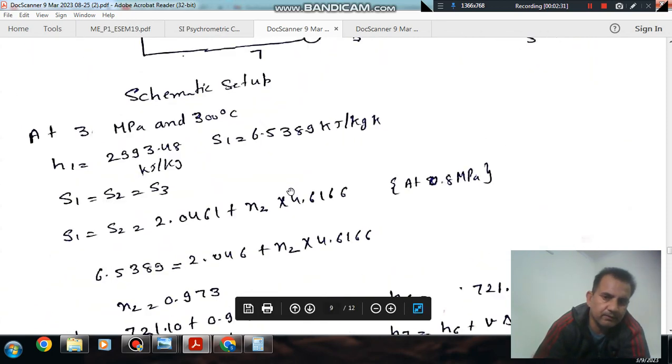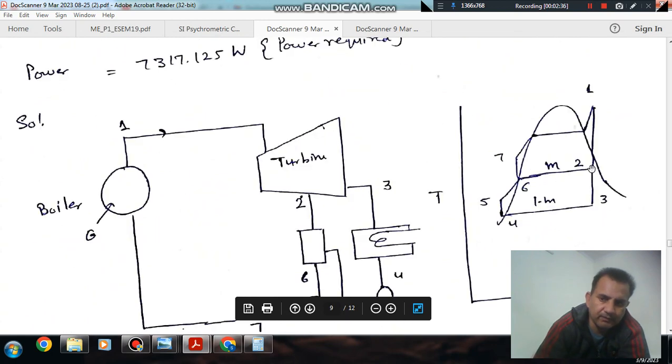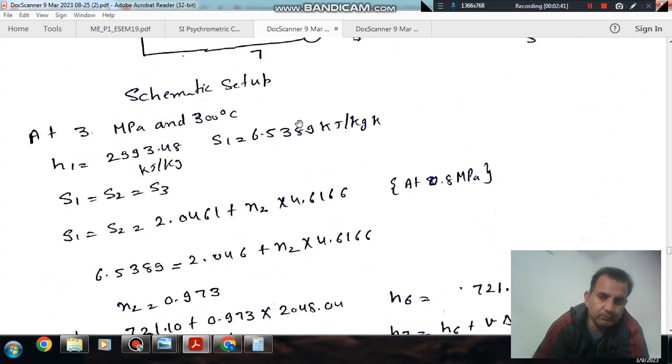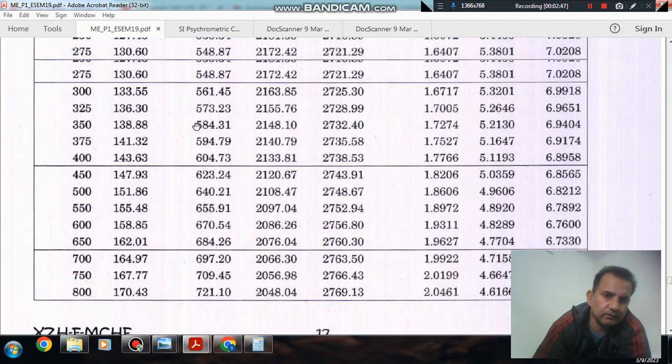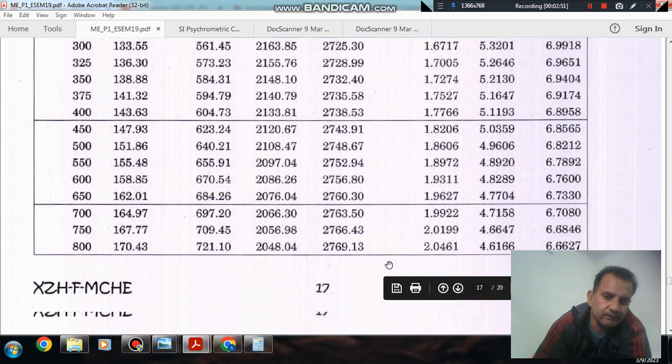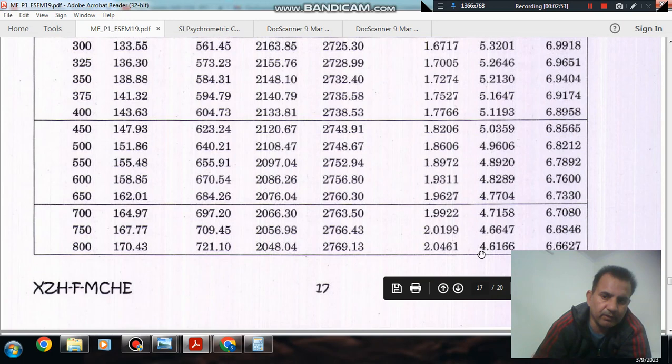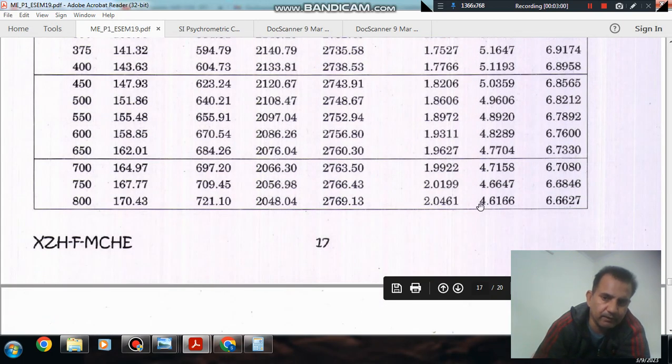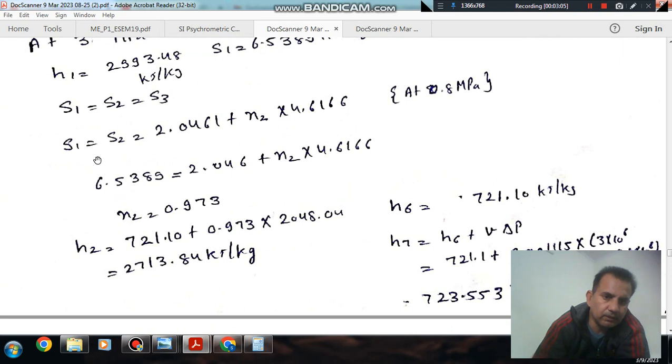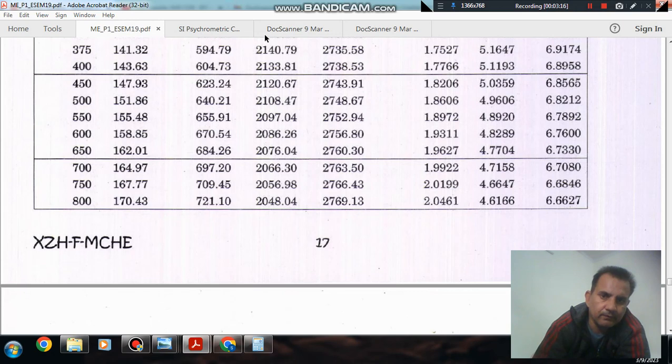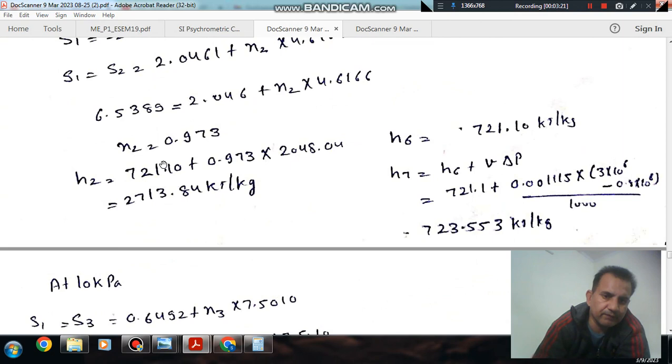So S1 is equal to S2 is 6.5389 kJ/kg·K. And the pressure at point 2 is 0.8 MPa. We can look up properties from steam tables for this entropy. For 0.8 MPa, the liquid entropy is Sf = 2.0461 and vapor entropy Sfg = 4.6166. So using S1 = Sf + x2·Sfg, we can find the quality x2 = 0.9785 and the enthalpy H2.